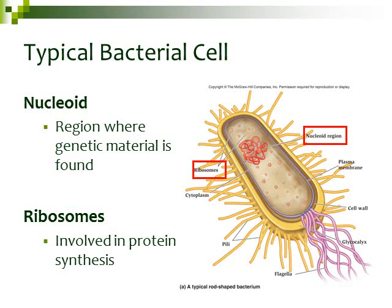Inside the cytoplasm, we have the nucleoid region. This is where our genetic material is found, and it's in the form of DNA. You also have the little orange ribosomes. Ribosomes are the structures that synthesize proteins — they actually create the proteins. Ribosomes are where all those amino acids are put together.